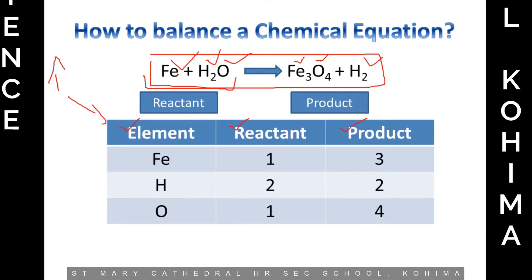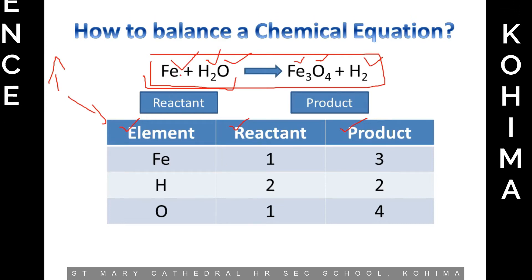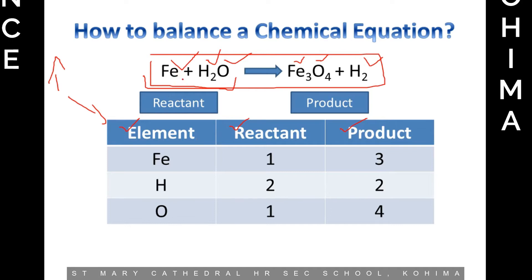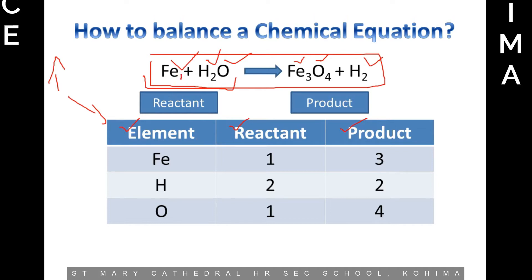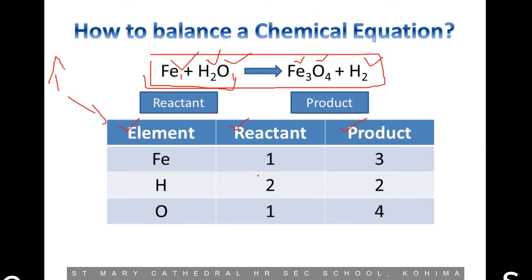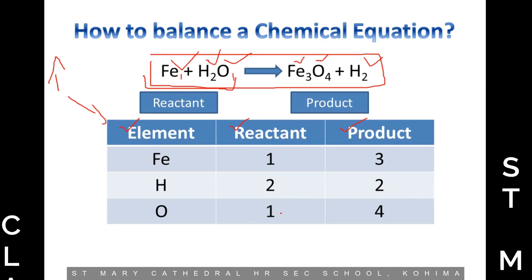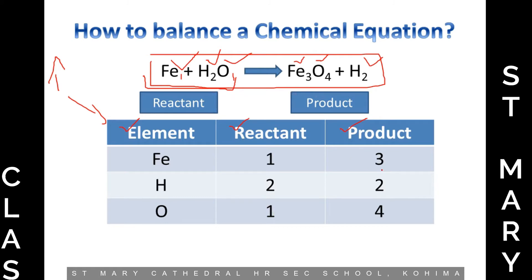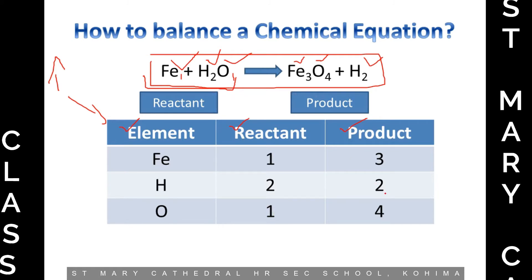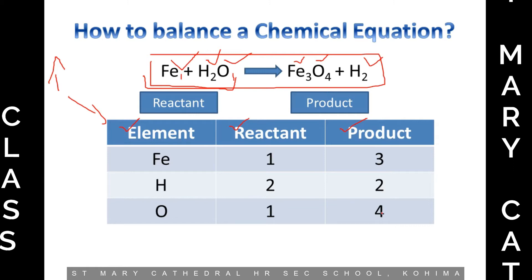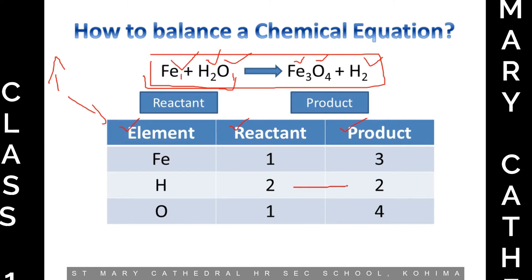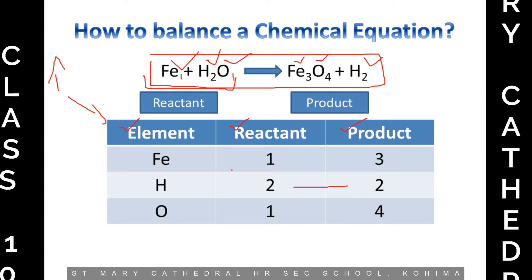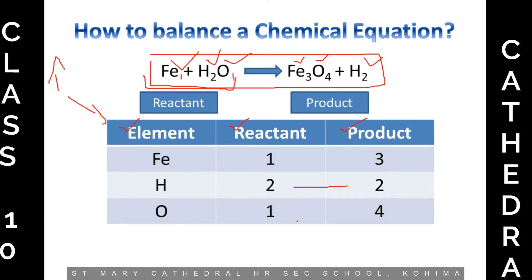In the reactant column, for iron — since there is no number written, we assume it is one. So iron has one, hydrogen has two, oxygen has one. Now in the product column: iron has three, hydrogen has two, and oxygen has four. You can see that only hydrogen is balanced, but iron and oxygen are not equal on both sides.